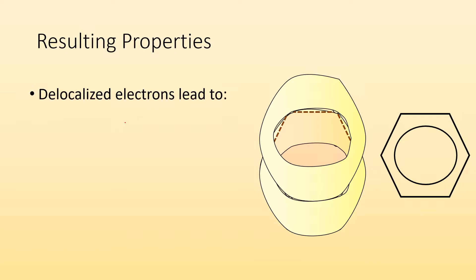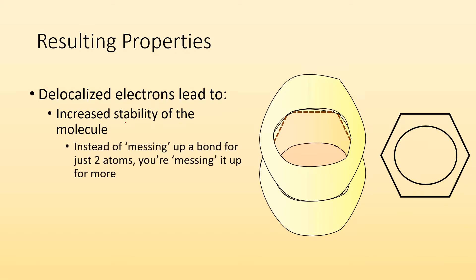Resulting properties: delocalized electrons lead to an increased stability of the molecule. You can think of it this way. If you wanted to break a double bond, you just got to upset two atoms involved in that double bond. But with delocalized electrons, you're really messing it up for more than just two atoms.